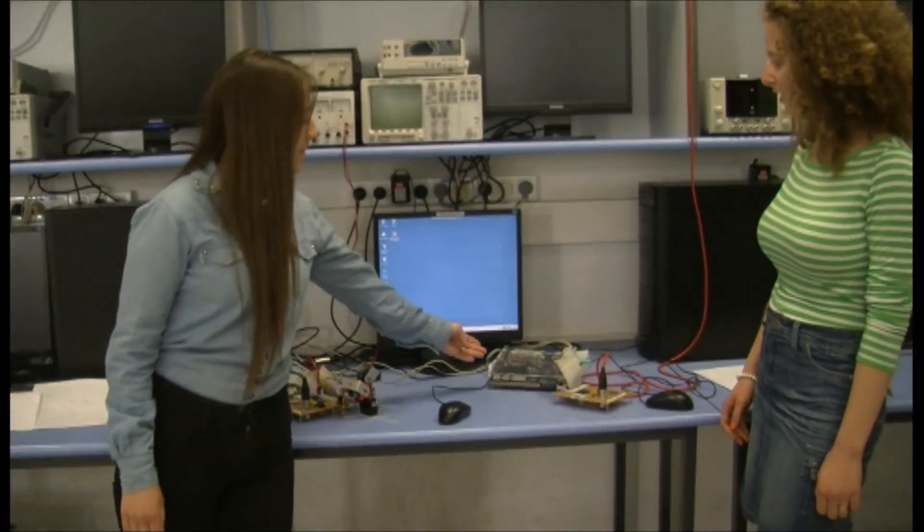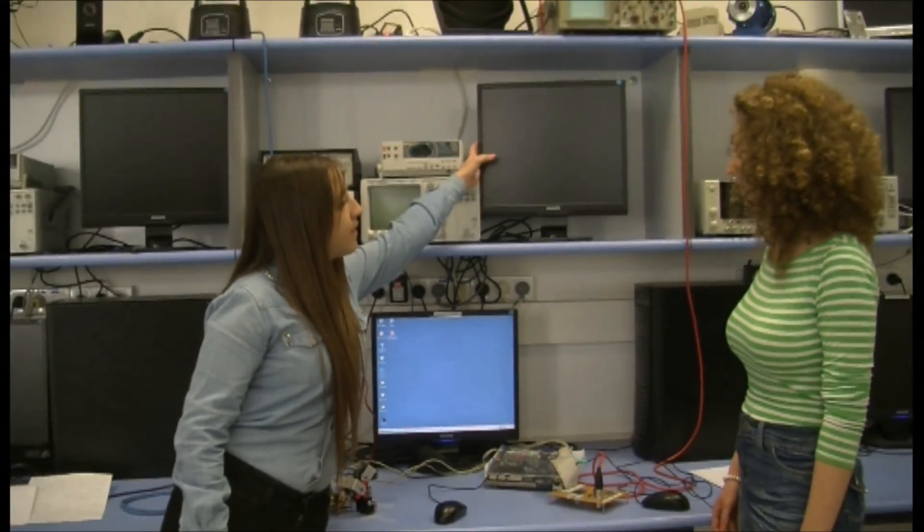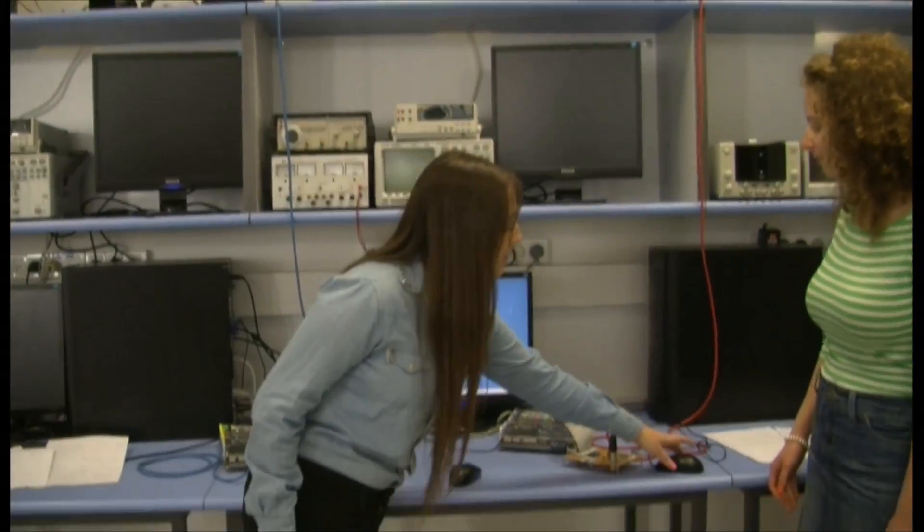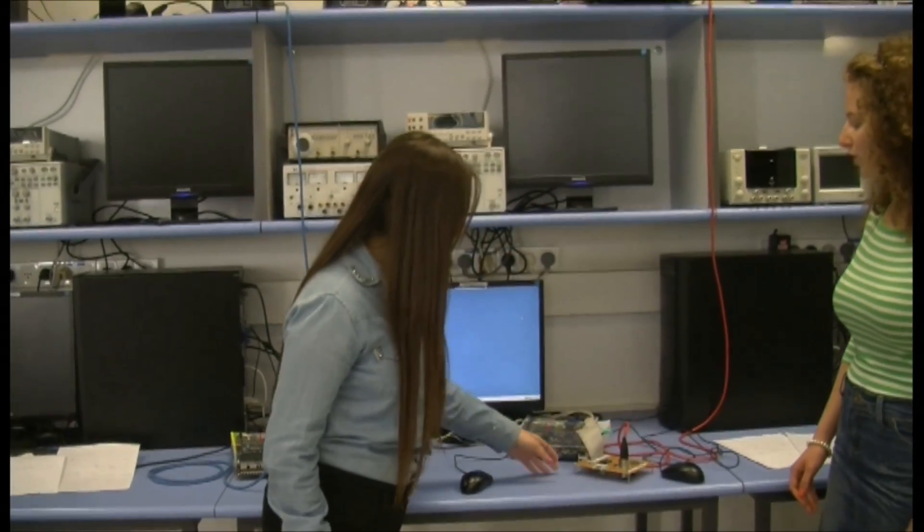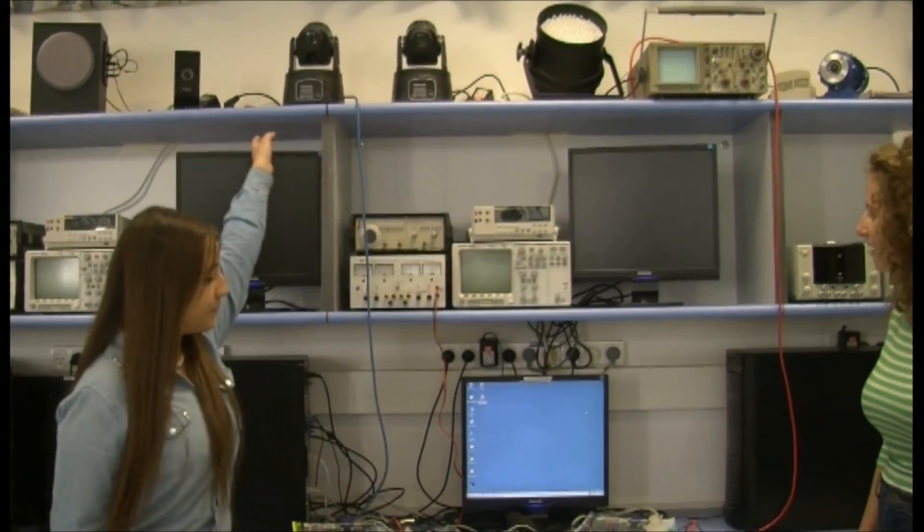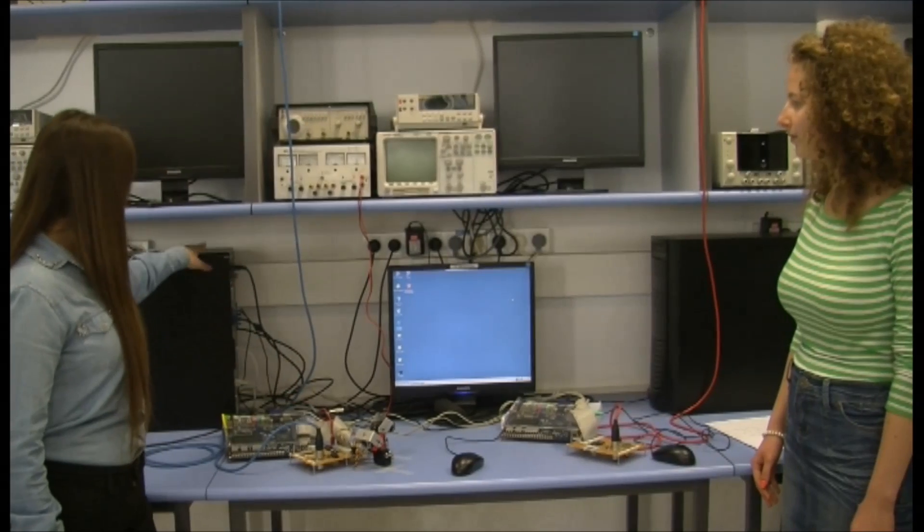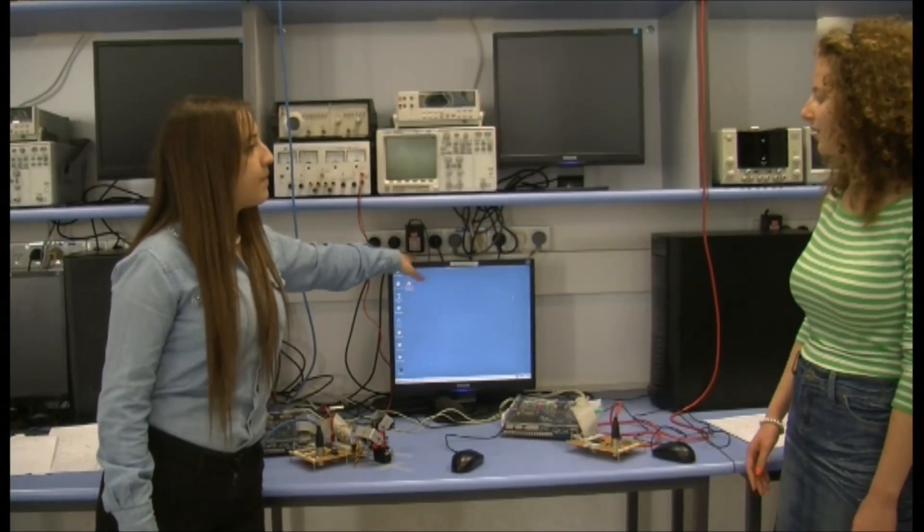The D2 board is connected to this VGA screen, to the mouse, and through the voltage converter to these three lamps. There is also connection to PC through serial cable. Here is the PC and here is its screen.